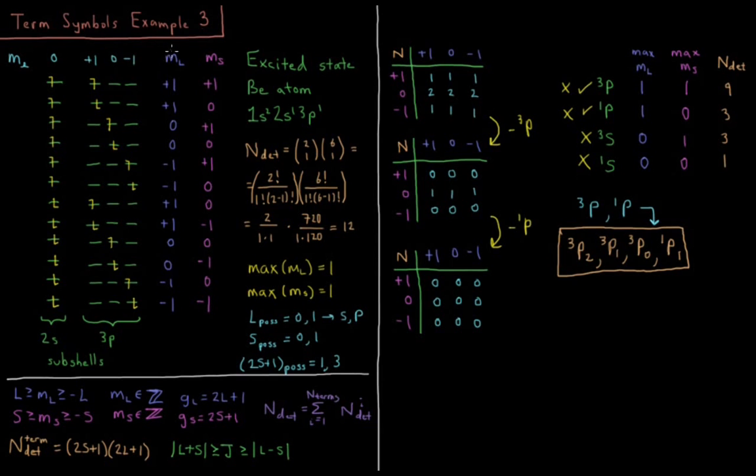We need to calculate our values of M sub capital L and M sub capital S. For M sub capital L, we sum up the value of M sub little l for each electron in each orbital. So little l for S is L equals 0, so M sub S equals 0. For P, it's L equals 1, so M sub L equals 1, 0, and minus 1. So we add those up, 0 plus 1, 0 plus 1, 0 plus 1, 0 plus 0, 0 minus 1, 0 minus 1, and then repeat for the second case.